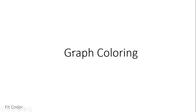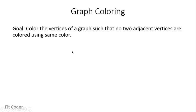In this video, I will be discussing graph coloring. The goal of graph coloring is that we have to color the vertices of a graph in such a manner that no two adjacent vertices are colored using the same color.